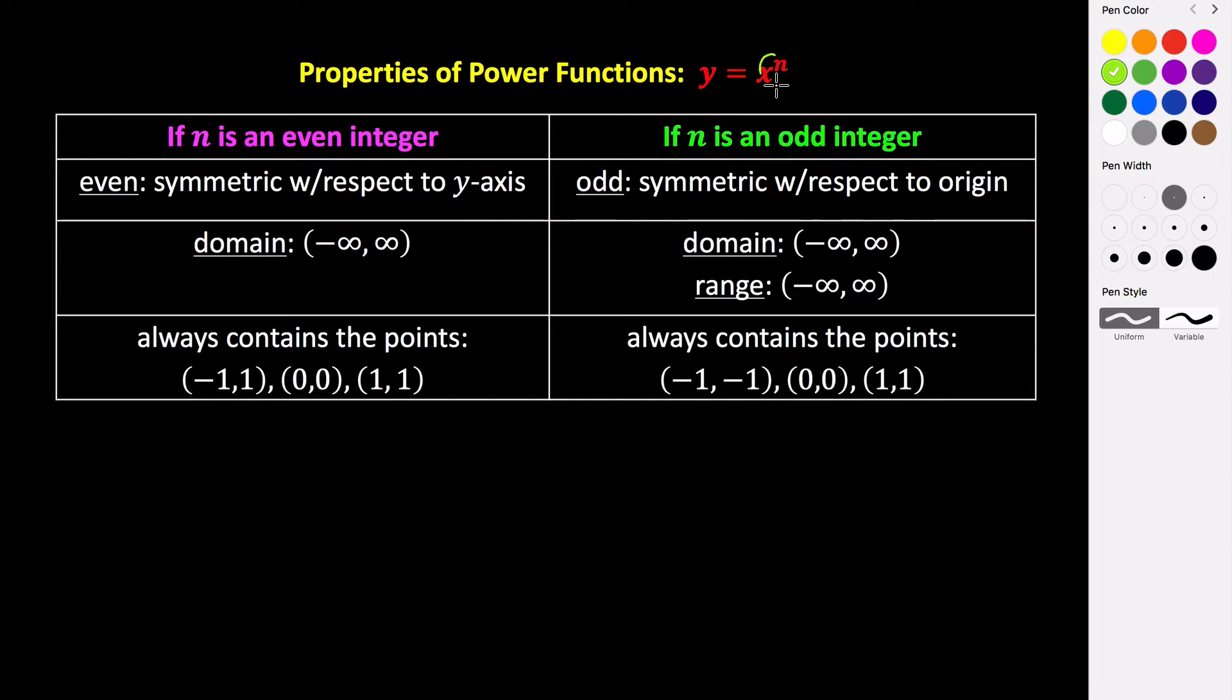So because they are a polynomial function, the power of n still does have to be a non-negative integer. So it has to be an integer that is either zero or positive whole numbers.